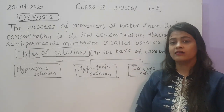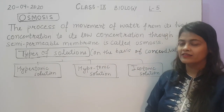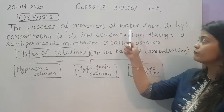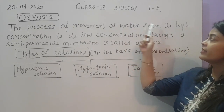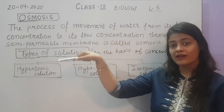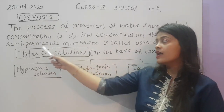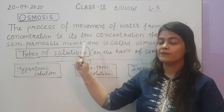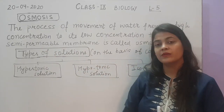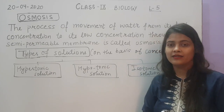You should be very careful while writing the definition of osmosis. You have to mention that water movement is from its own higher concentration to its low concentration and through a semi-permeable membrane. Without semi-permeable membrane, osmosis is incomplete.